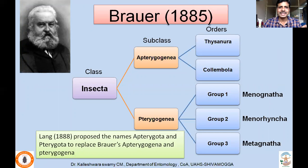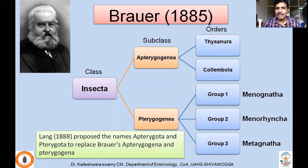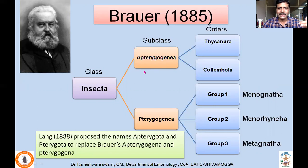In Brauer's classification, class Insecta consisted of two subclasses: Apterygogena and Pterygogena. These are the two subclasses and recognized different orders. The five groups considered are Thysanura and Collembola as orders. Pterygogena consisted of three groups: group one is called Meonognatha, group two is called Menorhyncha, and group three is called Metagnatha. Meonognatha included exopterygote insects — those with mandibulate mouthparts. Menorhyncha included hemipteran-type piercing and sucking insects, and Metagnatha included endopterygote insects with holometamorphosis. Later, Lang proposed the terms Apterygota and Pterygota in place of Apterygogena and Pterygogena.